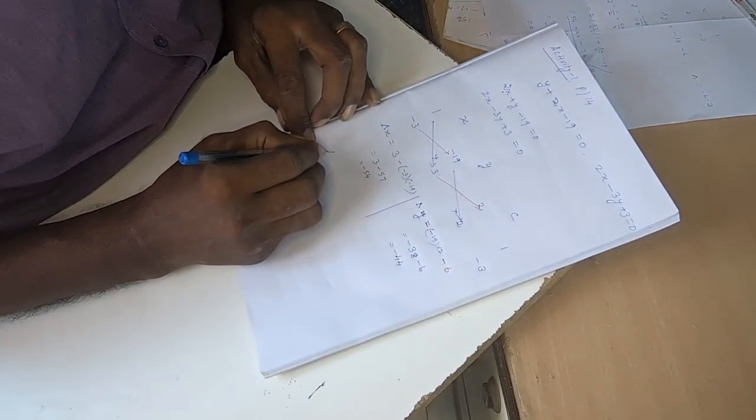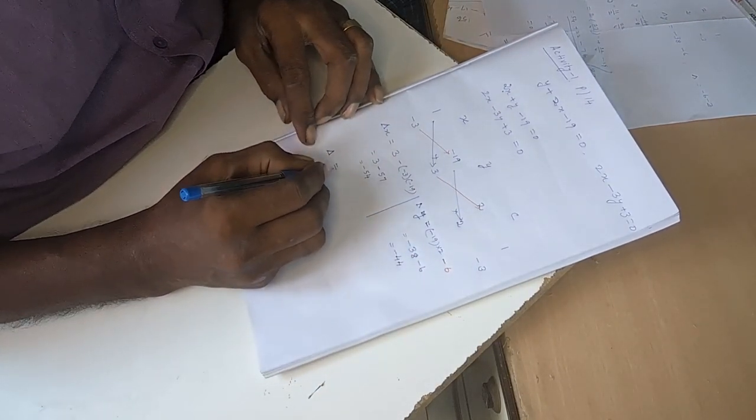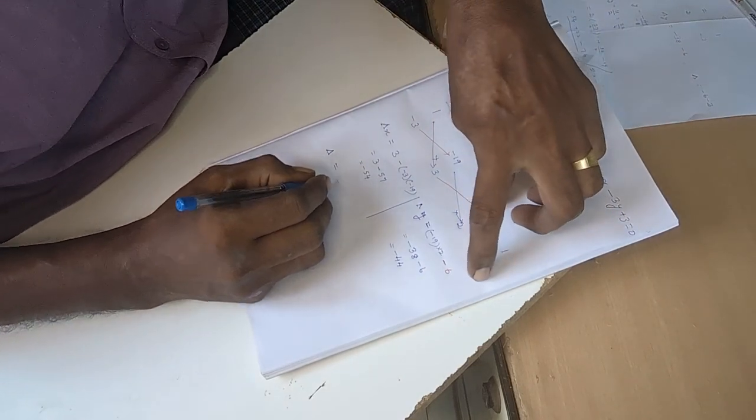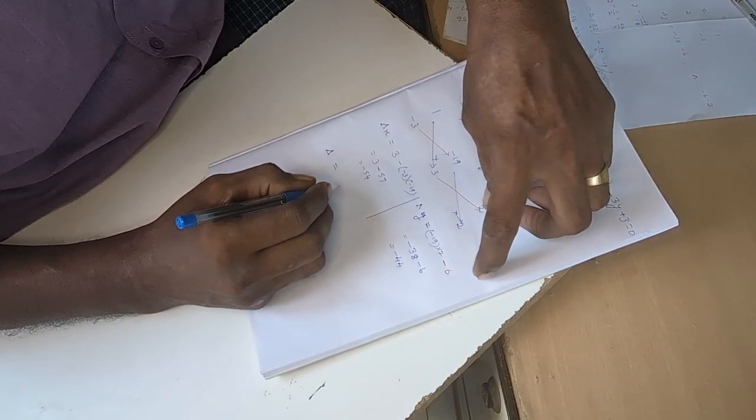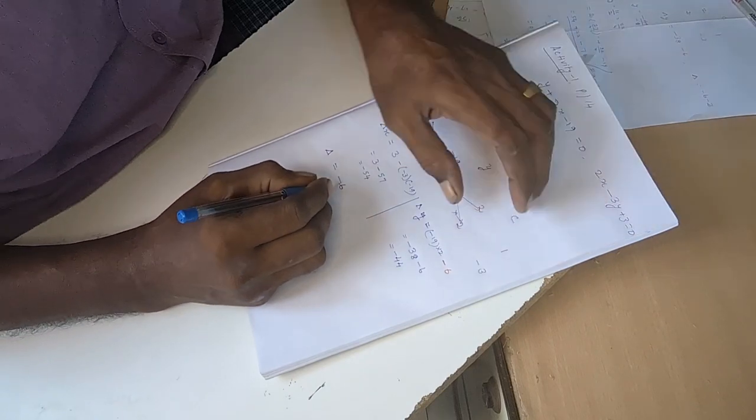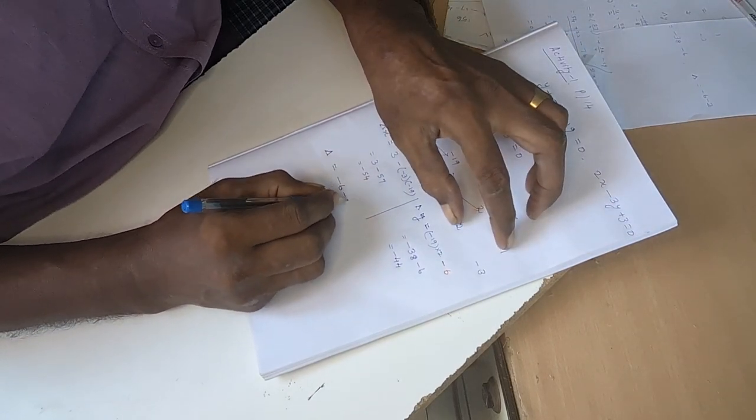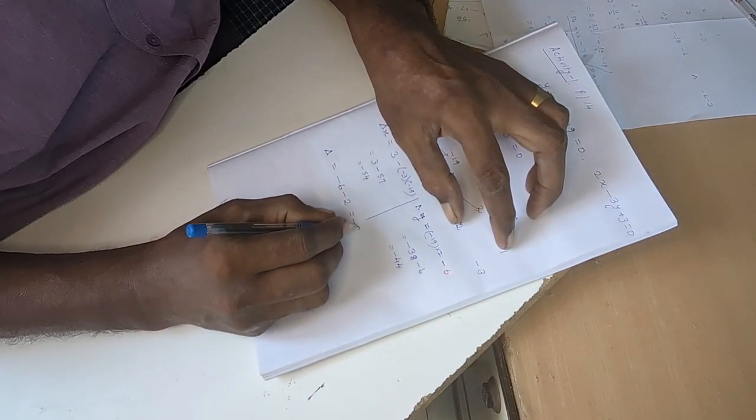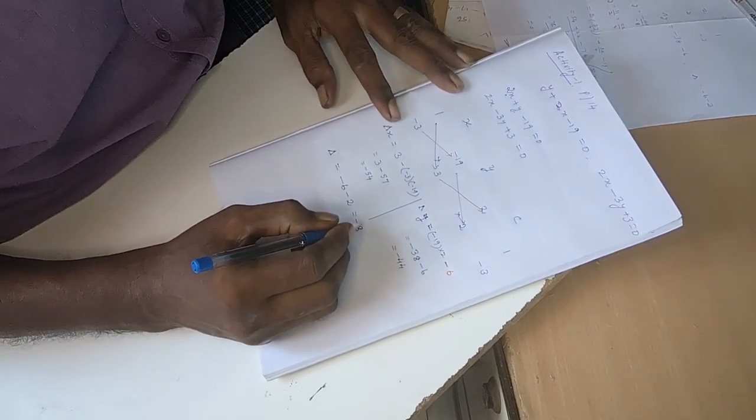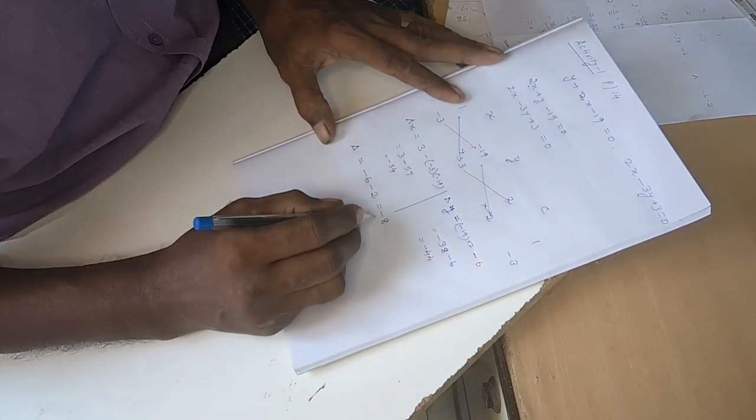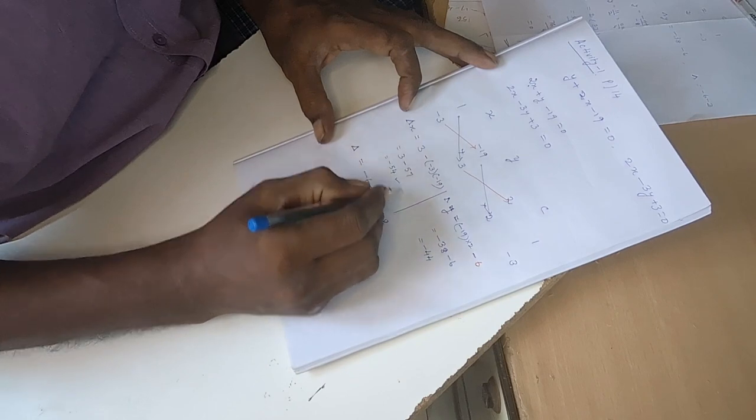Next we find delta value. Delta: 2 into minus 3 is minus 6, and this minus gives minus 2, so this is minus 8. This is delta. Delta x is here, delta y is here, and delta.